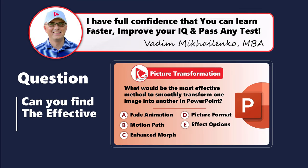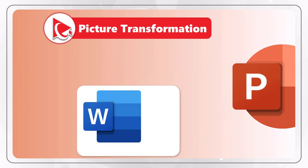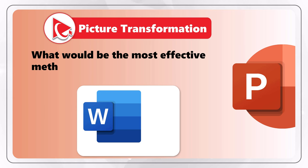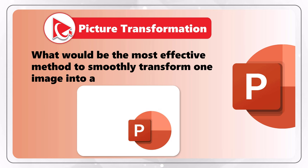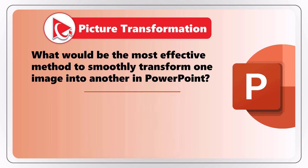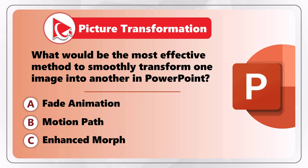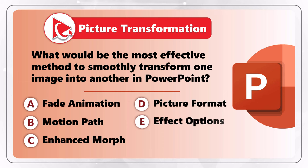Let's explore this cool and intellectually stimulating assessment test question together. You're presented with a picture, and you need to determine what would be the most effective method to accomplish this transformation in PowerPoint. You have five possible choices: Choice A, using fade animation; Choice B, using motion path; Choice C, using enhanced morph; Choice D, using picture format; and Choice E, using effect options.